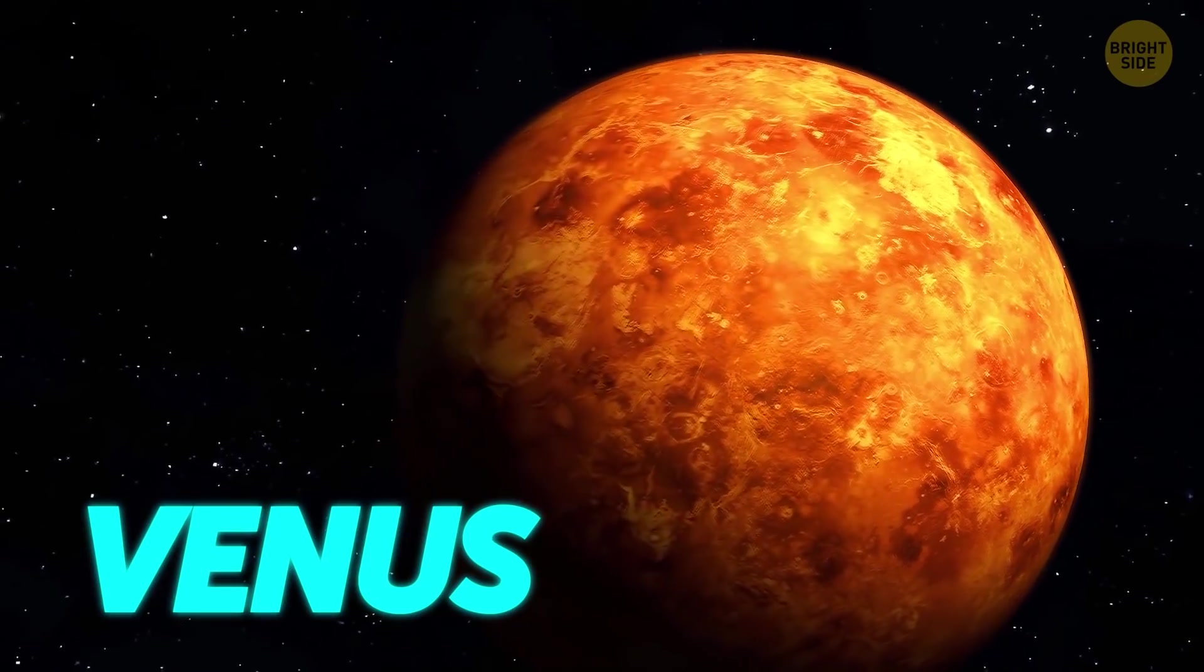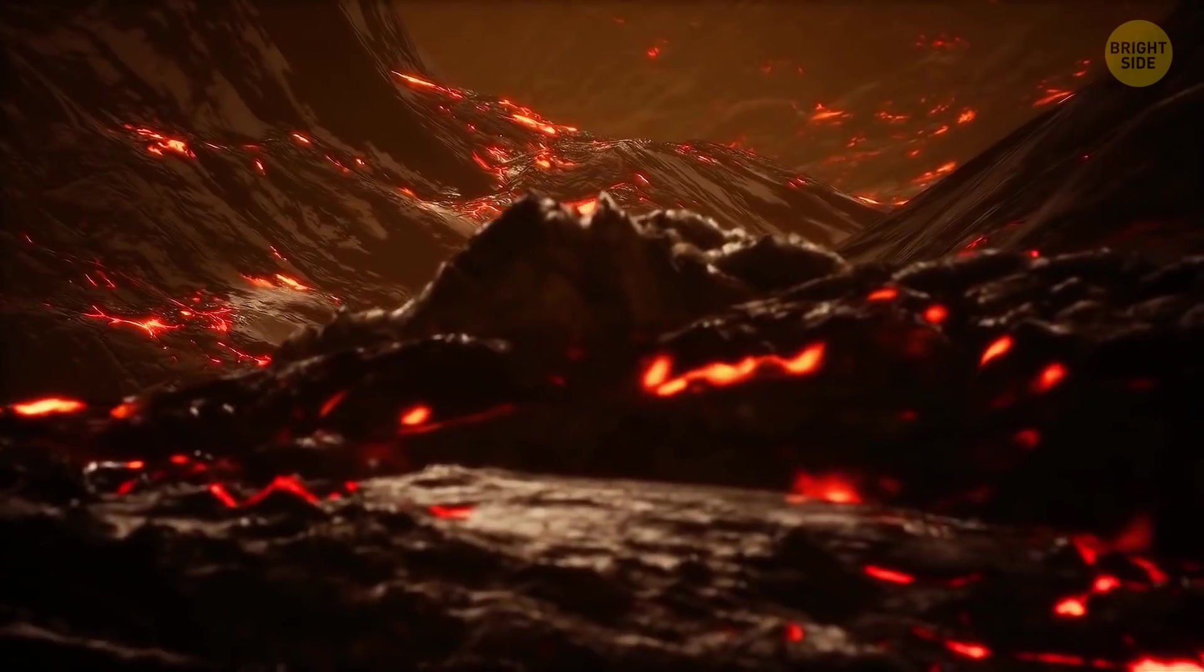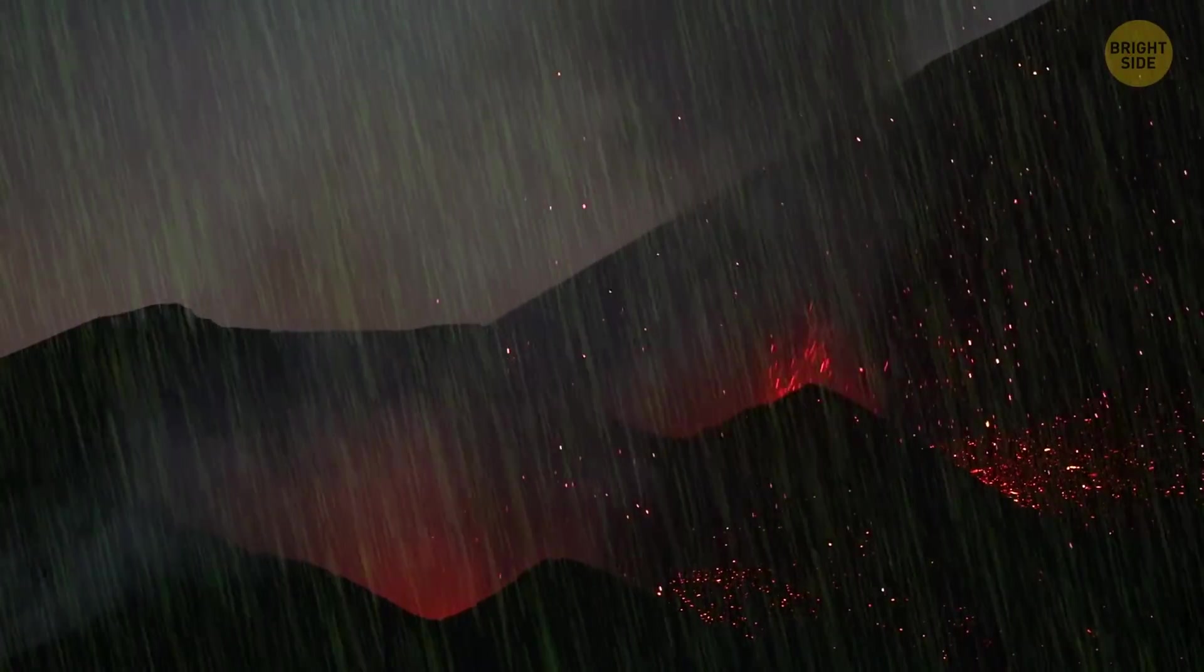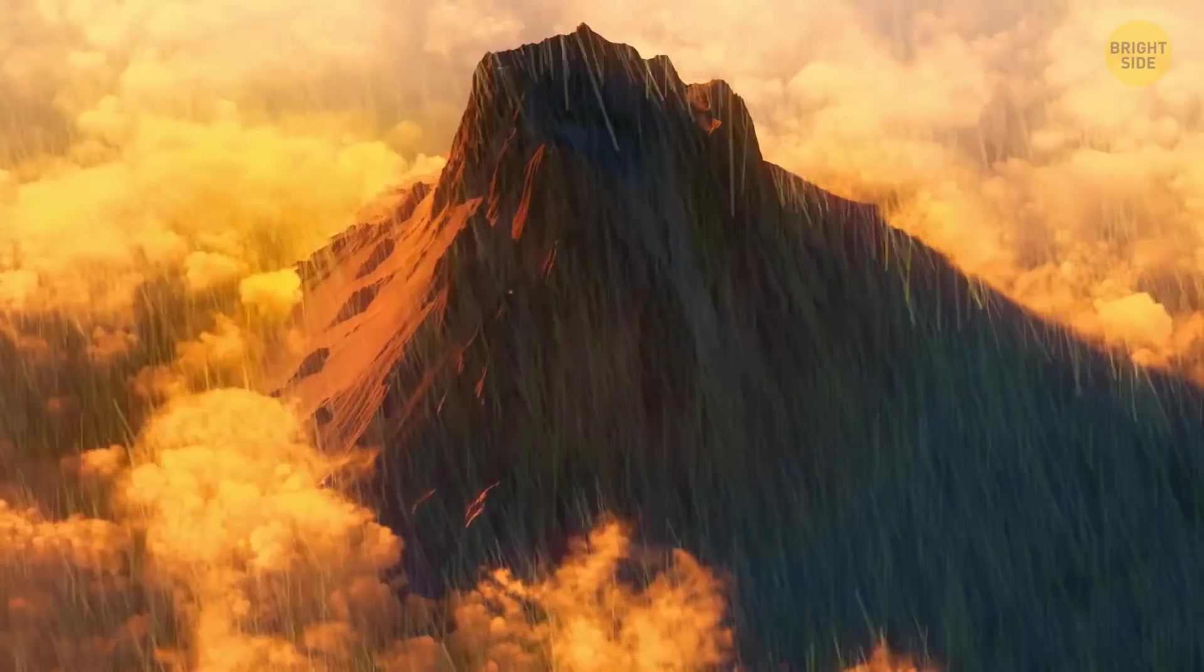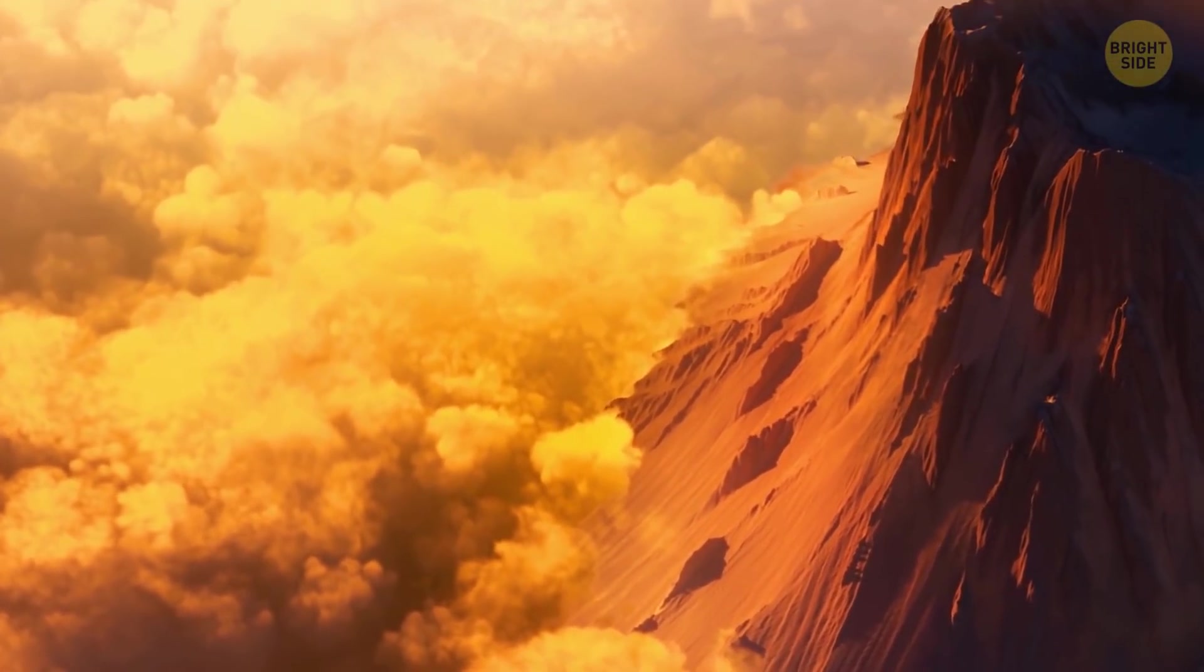One such planet can be closer than you think. Venus, the Earth's evil sister, might be home to microscopic life. Even though its surface is as hot as a furnace and showered by acid rains from carbon dioxide clouds, there might be something alive in its atmosphere.